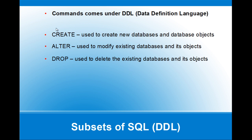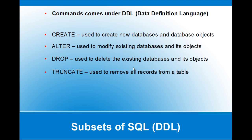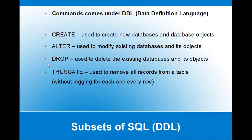So the first command creates the definition of the database object, ALTER modifies that definition, and DROP destroys the object. The next one is TRUNCATE, which is used to remove all rows from a table. It does not log on a row-by-row basis — it just makes a single entry that all rows have been deleted, resulting in minimal logging. TRUNCATE comes under DDL because it resets some properties of the object. For example, when you truncate a table that has an identity column or sequence number, it reseeds the identity column — that's why TRUNCATE is categorized under DDL.